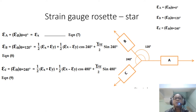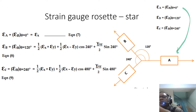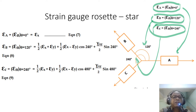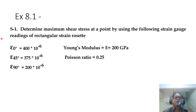We now move on to a strain gauge rosette in the star direction, where angle A is 0 degrees, angle B is 120 degrees, and angle C is 240 degrees. From that, you can calculate epsilon A equals epsilon x, and then solve for epsilon B and epsilon C. You solve those equations one by one to find the unknowns.